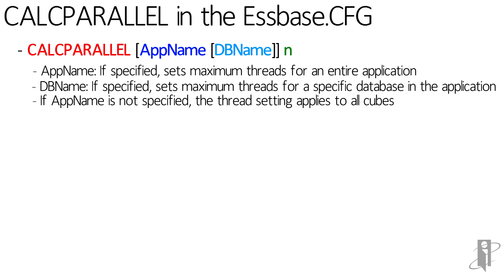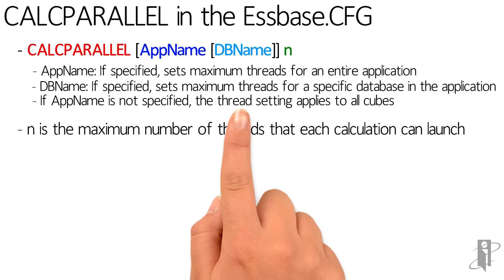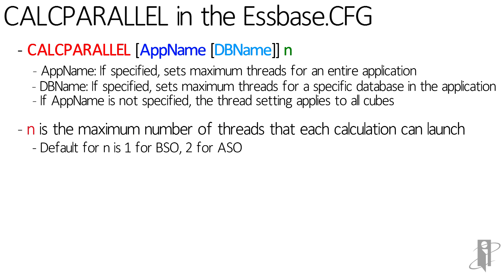So any database that's calculated, either block storage or aggregate storage, will max out at that number of threads. The default for a block storage database is 1, so if you don't put a Calc Parallel statement in at all, it's going to use 1 for block storage, and for aggregate storage it's going to use a much more impressive 2.